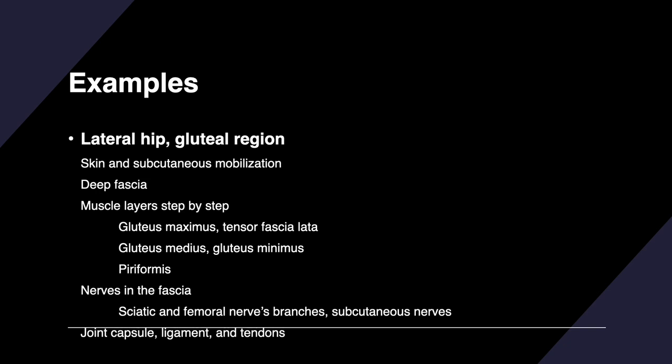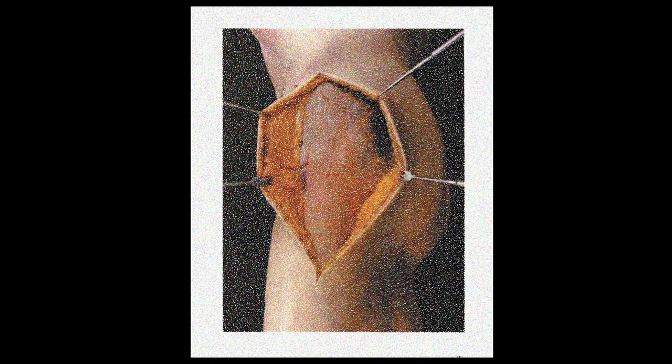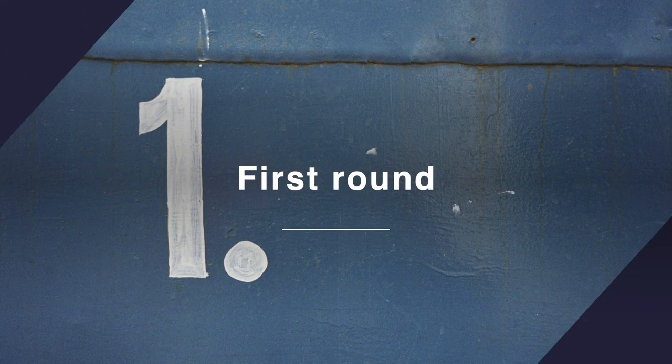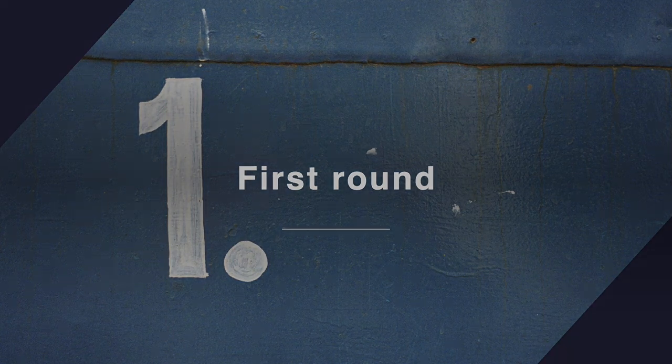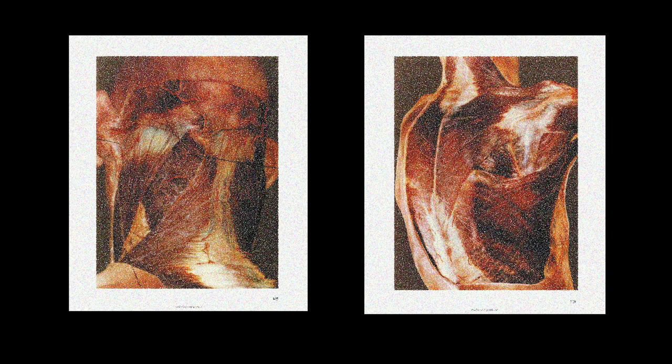I will show you an example using the lateral hip and indicate when to freeze to observe the structures. The skin and subcutaneous tissue have been mobilized and retracted to expose the iliotibial tract and two attached muscles. In the first rotation round, please note the deep fascia, subcutaneous nerve tissues, and penetrating vessels. You will observe the posterior SCM, trapezius muscle, and greater occipital nerves in the posterior neck.